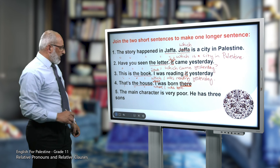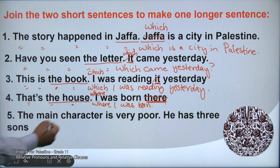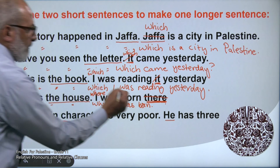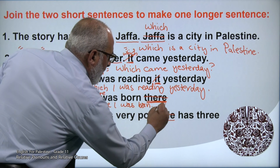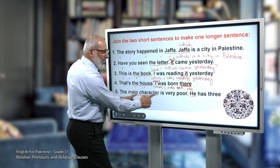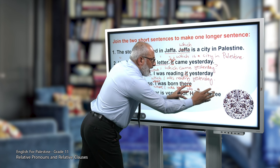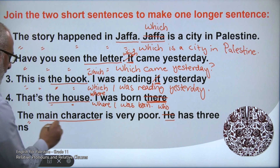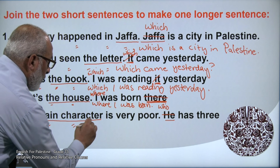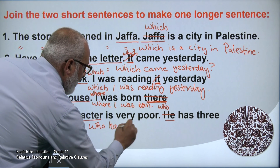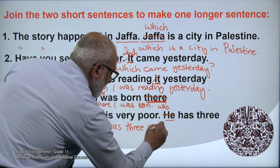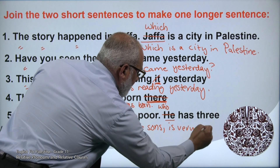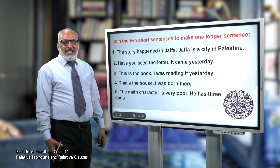Number five: 'The main character is very poor. He has three sons.' The pronoun 'he' refers to the main character — a person — so we use 'who.' We delete 'he' and place the clause next to the noun. It becomes: 'The main character, who has three sons, is very poor.' This is a non-defining relative clause with commas because it adds extra information. And with this, we have finished our lesson. Thank you very much and see you later.